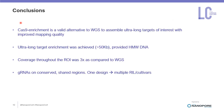To conclude, this study showed that Cas9 enrichment is a valid alternative to full genome sequencing for assembling ultra-long targets of interest. While a 20 kb target is usually recommended for Cas9-mediated targeted enrichment, we showed that even 50 kb subregions were possible, provided that you have high molecular weight DNA. Coverage throughout the region of interest was three times higher compared to full genome sequencing. Additionally, guide RNAs were designed on conserved shared regions, meaning one design can be applied to multiple recombinant inbred lines or cultivars.